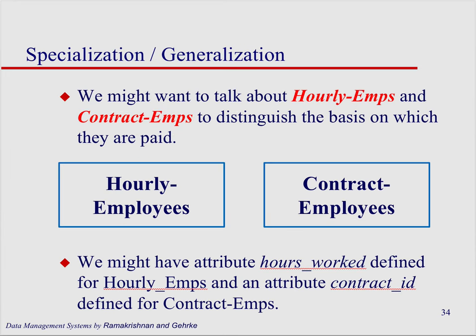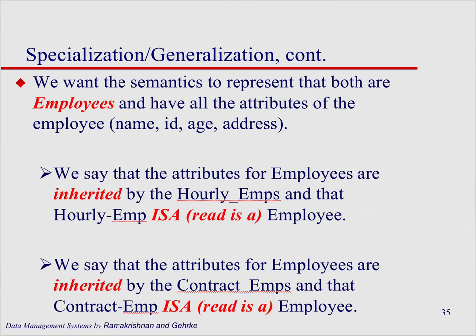Here we have an example of hourly employees and contract employees. You could be an hourly employee where you work hourly, or you could be a contract employee where you don't work hourly. To represent this, we have an employee entity — things common to all employees include name, ID, age, and address. The attributes for employees are inherited by the hourly employee.